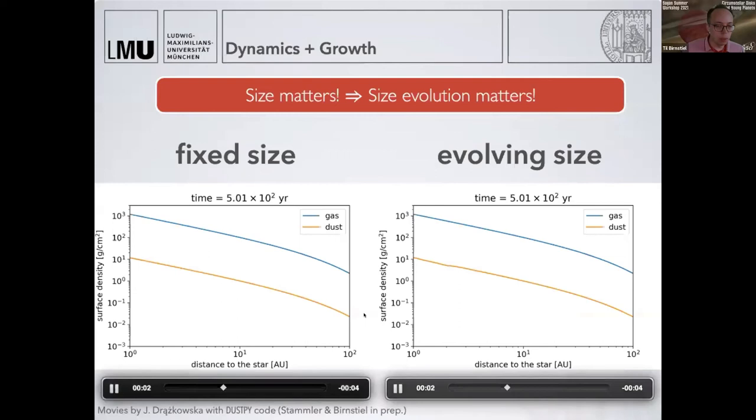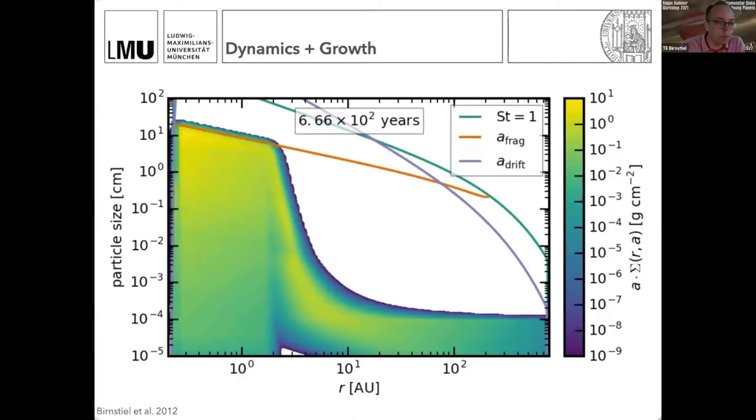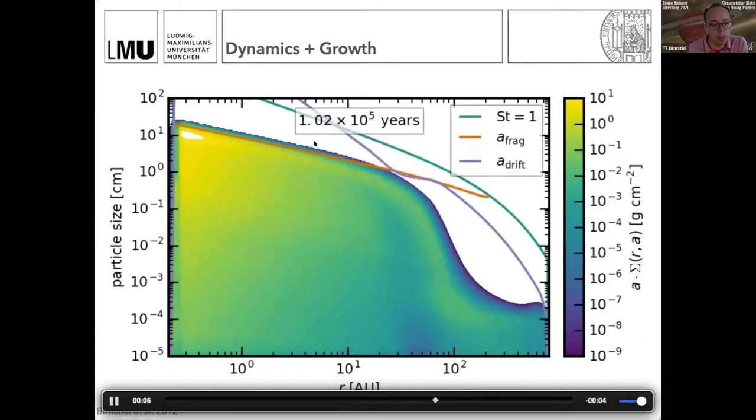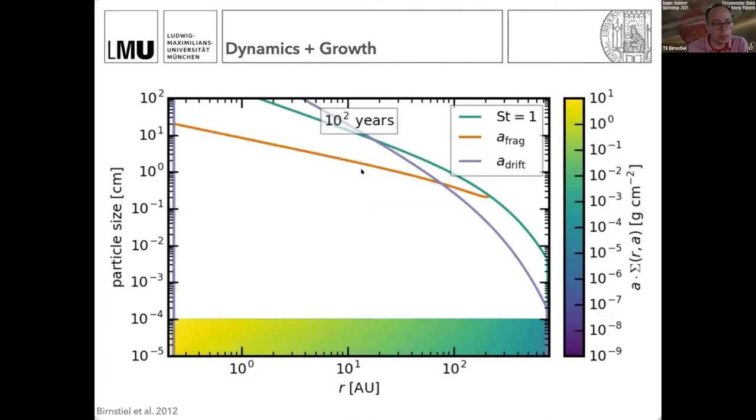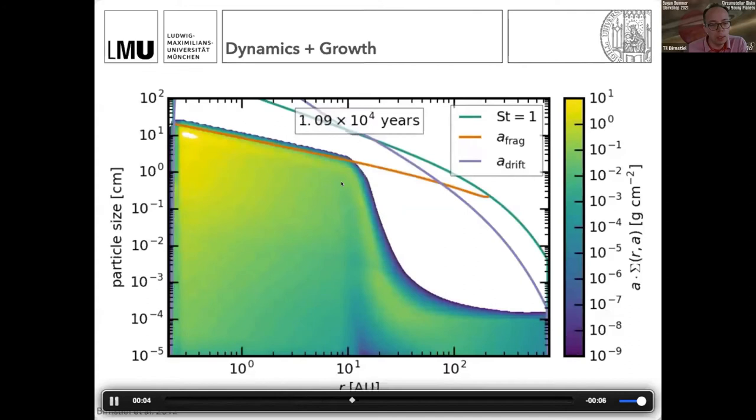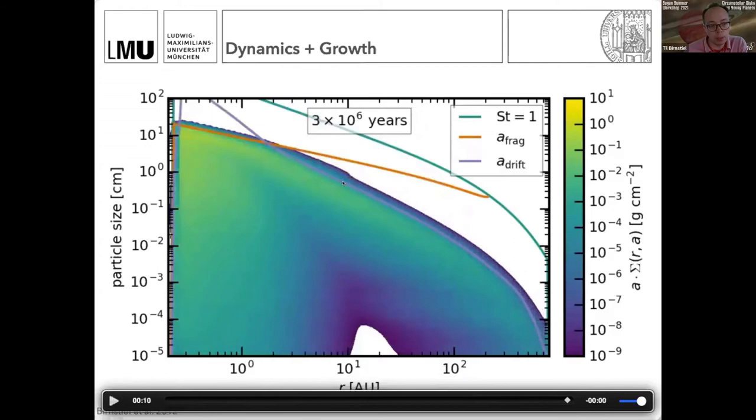If we look in one of these simulations, we have very fast growth in the inner region. The outer regions are catching up, and particles never grow larger than one of these lines. The first line is called the fragmentation barrier—particles grow up until the point where they fragment. The outer part we call the drift barrier—these are particles that drift as fast as they grow, so they can't just move to larger sizes; at the same time they have to move inwards. You might notice a problem: we only grow at best something like a couple of centimeters. That's not what we can build planets from. No planetesimals are formed.